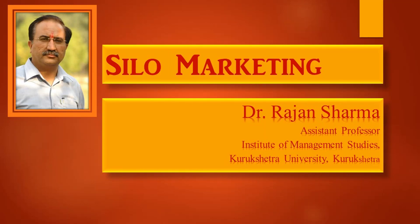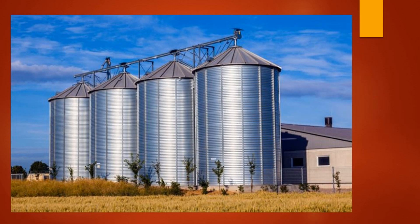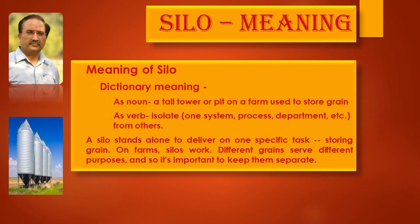Hello students, today we are going to discuss silo marketing. Before we head towards it, I'll tell you it's a metaphor used for marketing, taken from the concept named as silo. A silo is a system where different varieties of the same crop are kept in different compartments. As you can see from the picture, there are four compartments which might have the same variety of crop or food grain.